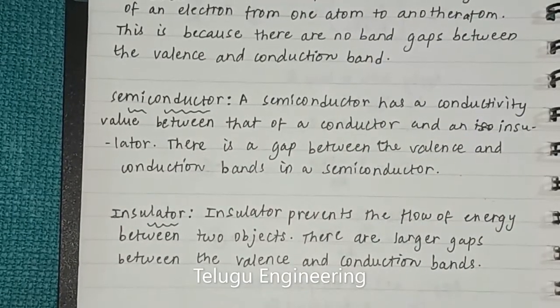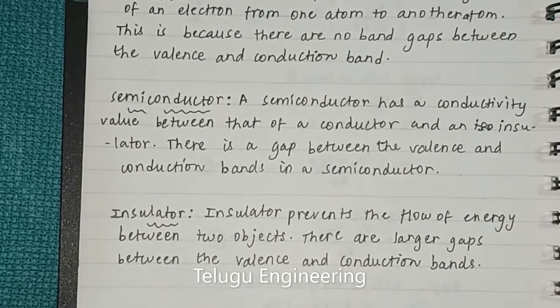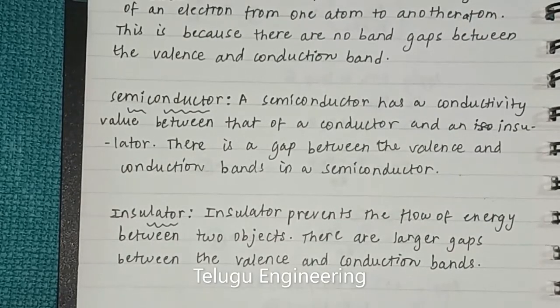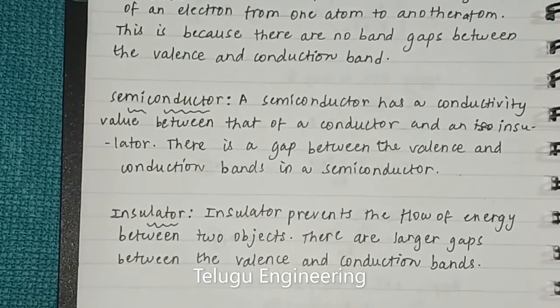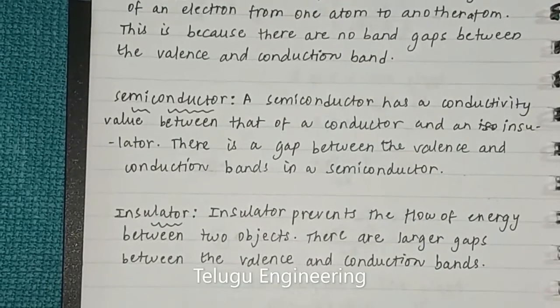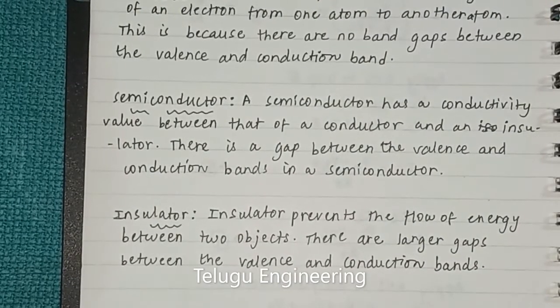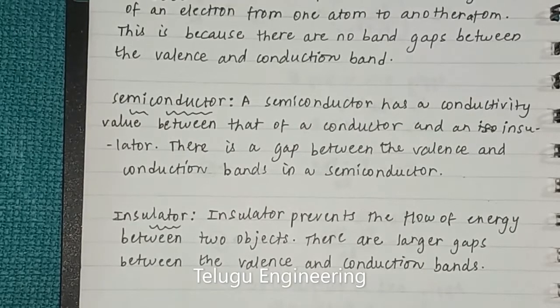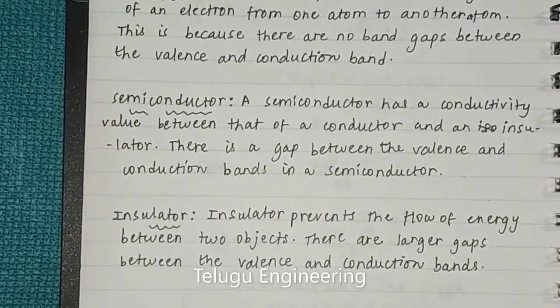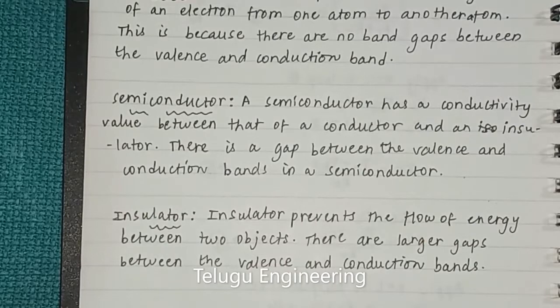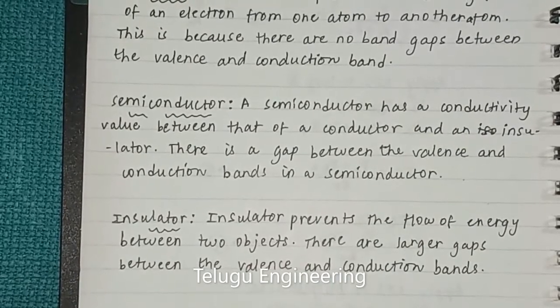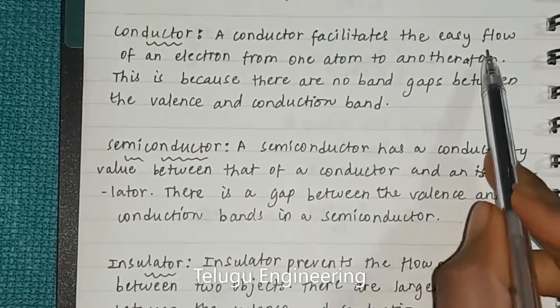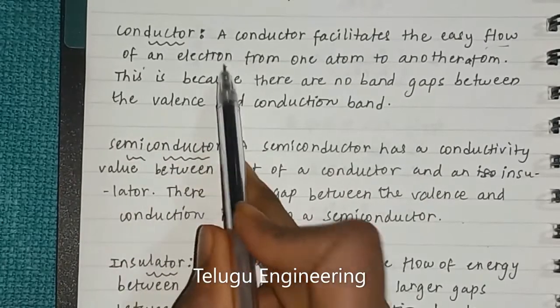Let me conclude this topic with a briefing on the types of materials we have discussed so far. Firstly, conductors: they support easy flow of an electron from one atom to another atom. Flow of an electron is an electric current and determines the electric current passing.